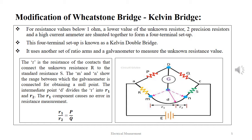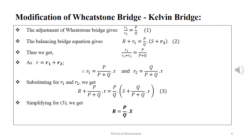The intermediate point d divides R into two components R1 and R2. The R1 component causes no error in the resistance measurement, and R1 and R2 are related by the expression R1/R2 = P/Q. By adjustment of the Wheatstone bridge, we get the expression r1/r2 = P/Q. Since r = R1 + R2, R2 = r × P/(P+Q). The balancing bridge equation gives r1/(r1 + r2) = P/(P+Q).